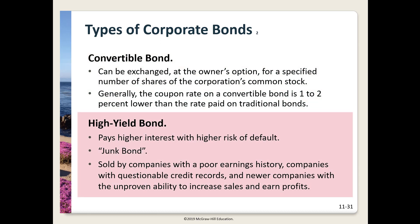High yield or junk bonds have a significantly higher risk of default and carry a higher interest rate. Originally all corporate bonds were high grade, and only if a company fell on hard times would it fall into the junk bond category — termed fallen angels. In the 1980s, Michael Milken and the advent of original-issue junk bonds used to finance many corporate takeovers also opened the corporate bond market to firms willing to pay the higher interest rate who could not participate before.